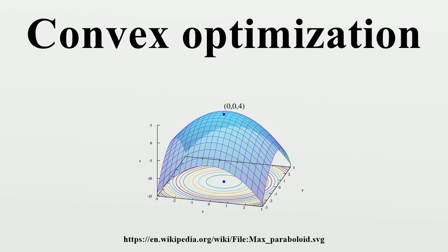Standard form is the usual and most intuitive form of describing a convex minimization problem. It consists of the following three parts: a convex function to be minimized over the variable; inequality constraints of the form, where the functions are convex; equality constraints of the form, where the functions are affine.